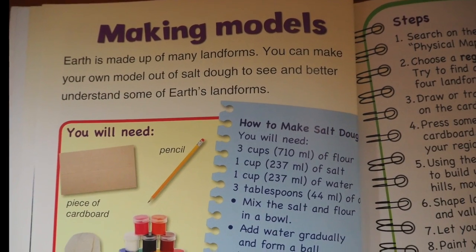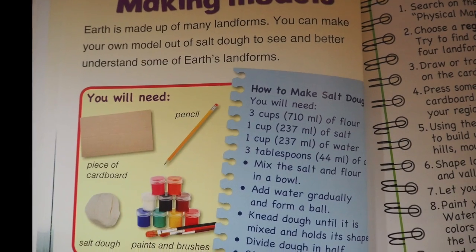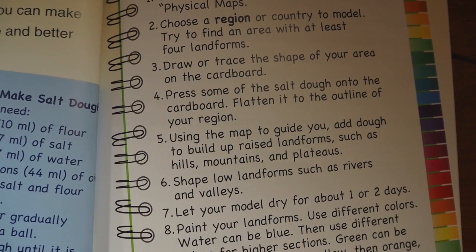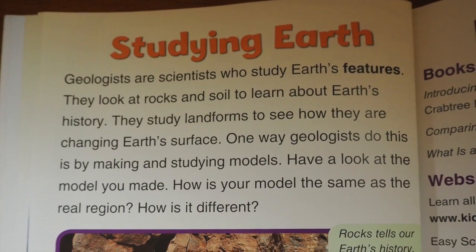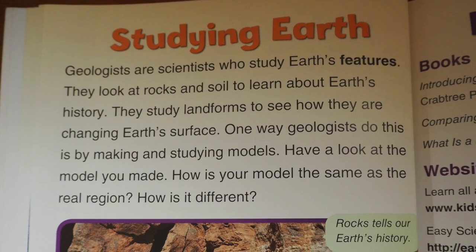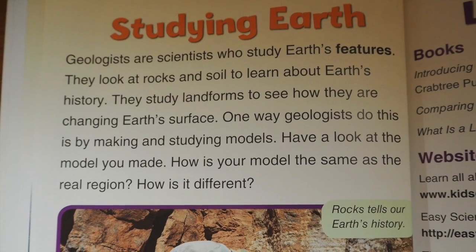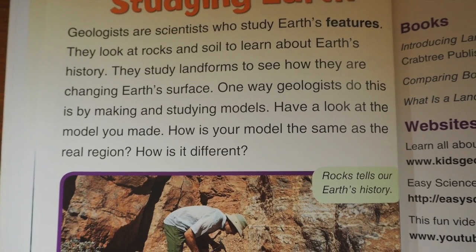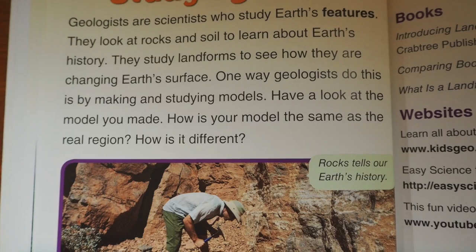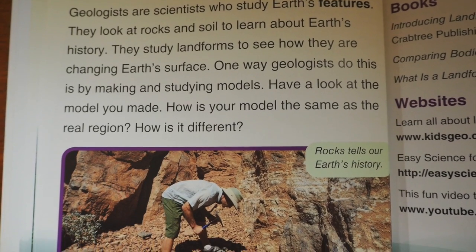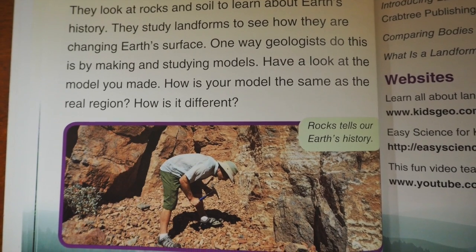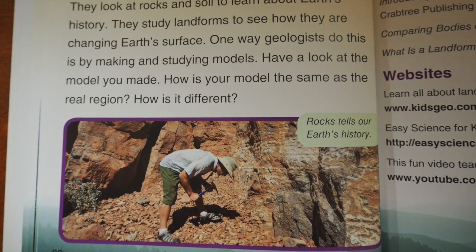Earth is made up of many landforms. You can make your own model out of salt dough to see and better understand some of Earth's landforms. Geologists are scientists who study Earth's features. They look at rocks and soil to learn about Earth's history, and they study landforms to see how they are changing Earth's surface. One way geologists do this is by making and studying models. How is your model the same as the real region? How is it different?